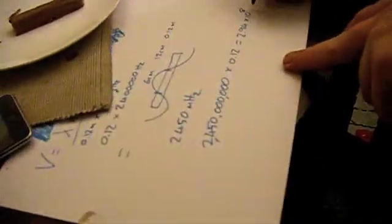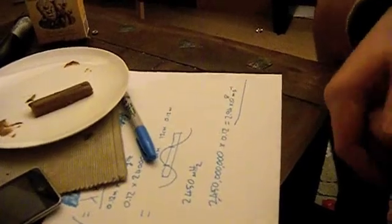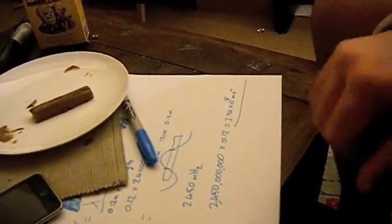You get 2.94 times 10 to the 8 meters per second, which is the speed of light. Something very clever physicists spent half a century trying to calculate. They probably didn't have microwaves back then though. Yeah, but they could have used the same method.